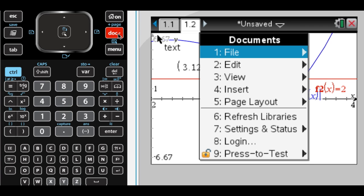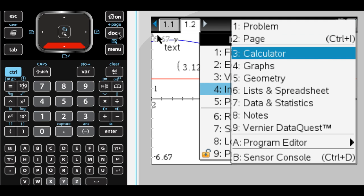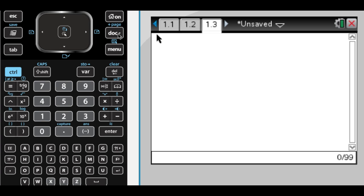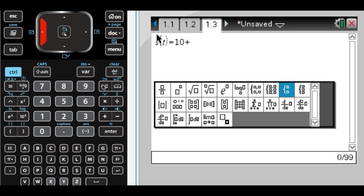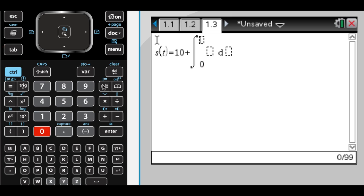Part B, I have to write an integral expression. So the expression that I would write is S of T equals 10 plus the integral. So this is what I would write on my paper: integral from 0 to t of v of x dx. That's an integral expression that gives you the position at time t.